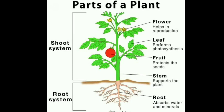Plants have different parts and each part has a different role to play. Flowers help in reproduction. Leaves perform photosynthesis — the process of making food for the plant with the help of water, sunlight and carbon dioxide. Fruit protects the seed. Stem supports the plant. Root absorbs water and minerals. That's all about parts of a plant.